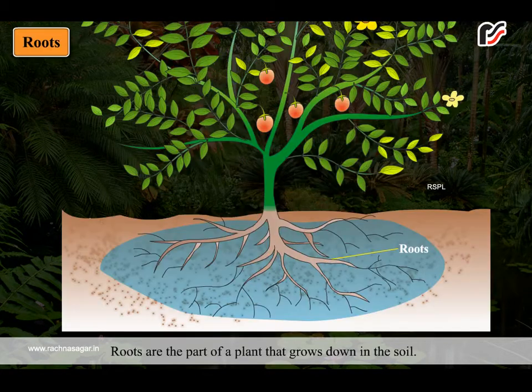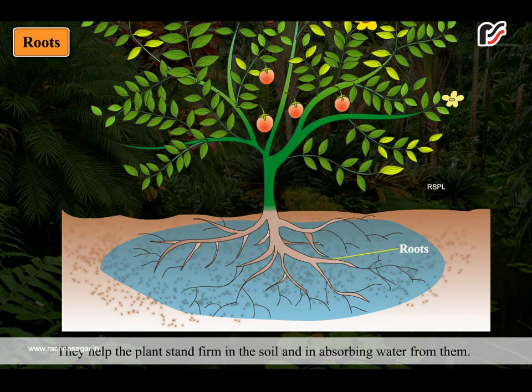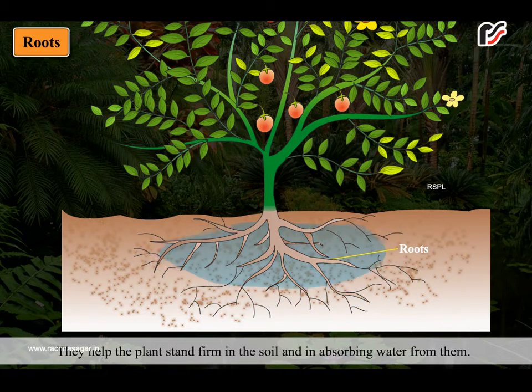Roots are the part of a plant that grows down in the soil. They help the plant stand firm in the soil and in absorbing water from it.